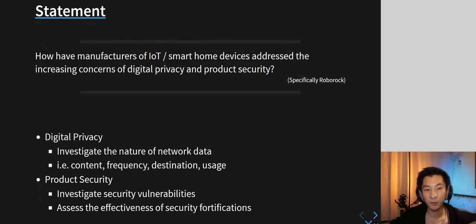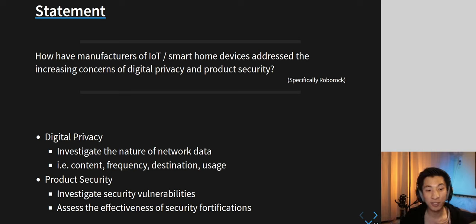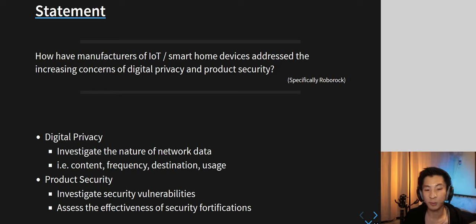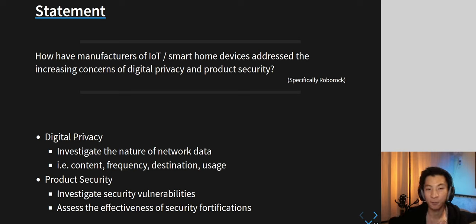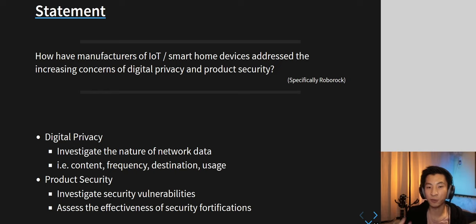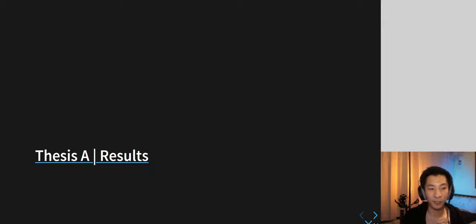My thesis statement is: how have manufacturers of IoT or smart home devices addressed increasing concerns of digital privacy and product security — specifically with the Roborock vacuum cleaner. Breaking it down: digital privacy covers the nature of network data, how it's used, how frequently, and where it's being sent. Product security investigates vulnerabilities in the code and how Roborock has addressed those issues.